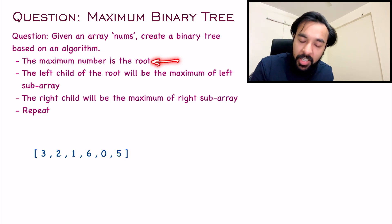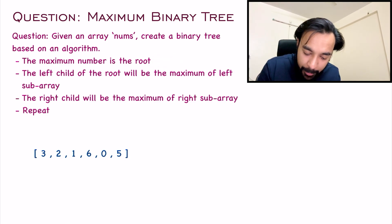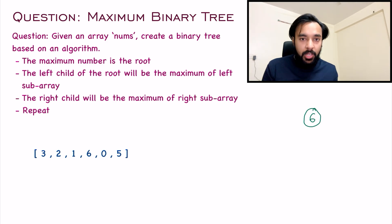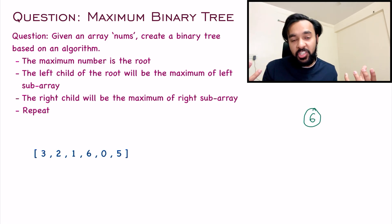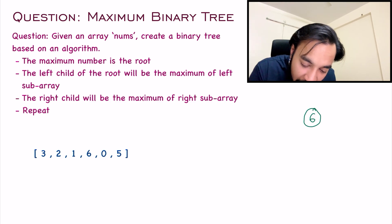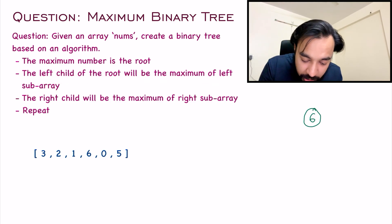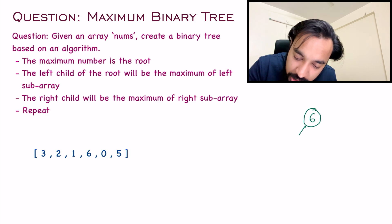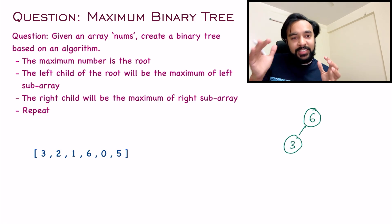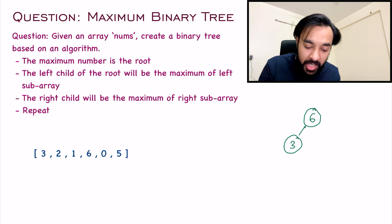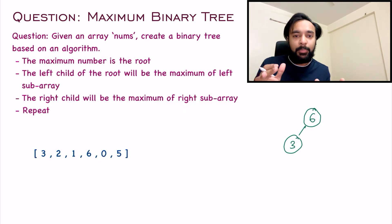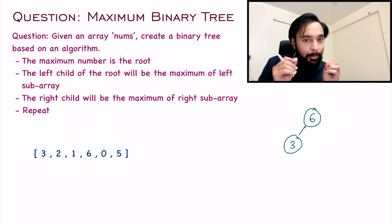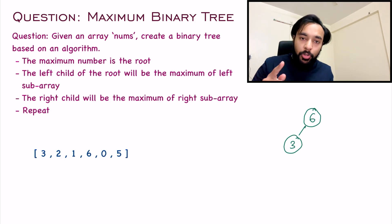First of all, the maximum number will be the root element. Out of all elements you can see that six is the maximum, so the root will be six. Now you have to find the left child and the right child. The left child will be the maximum of the left sub-array — you can see that in this left sub-array the maximum element is three, so the left child will be three. Similarly, the right sub-child is the maximum of the right sub-array, which is 0 and 5, and the maximum is 5, so the right child will be 5.